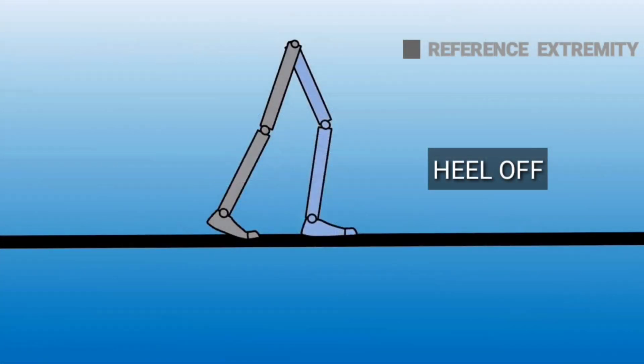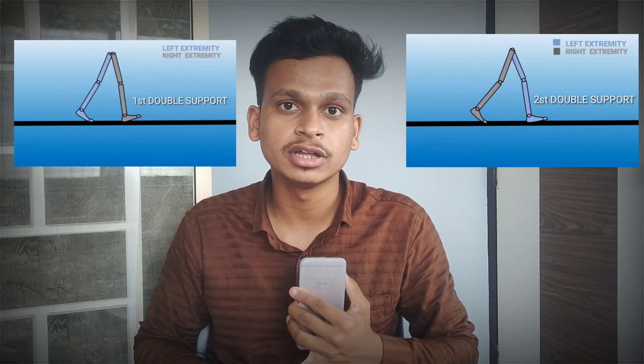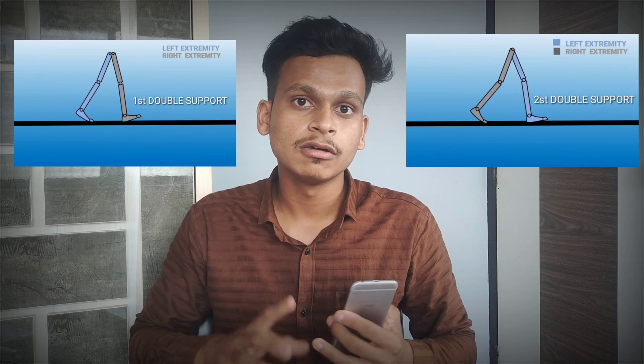Following mid stance is heel off and toe off. Heel off refers to the time period when our heel leaves the ground, and it occurs at 40 percent of the gait cycle. Toe off refers to the instant when our toes leave the ground and go into acceleration, that is the pre-swing. At this point comes the second double support, where the reference extremity is leaving the ground and the opposite extremity — the left extremity — is making initial contact.